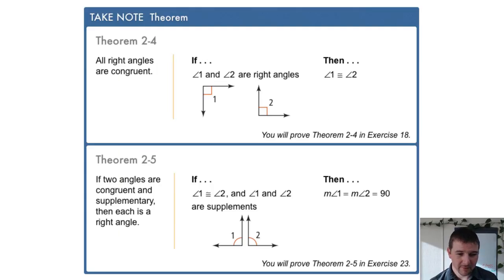Theorem 2-4 states that all right angles are congruent. We know this by the definition of right angles being 90 degree angles, but here we have a theorem that we can use as a justification in our proofs.